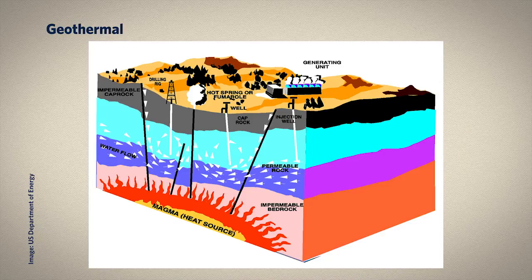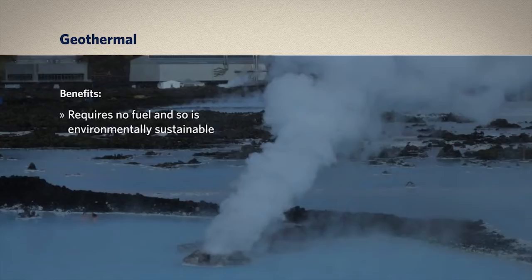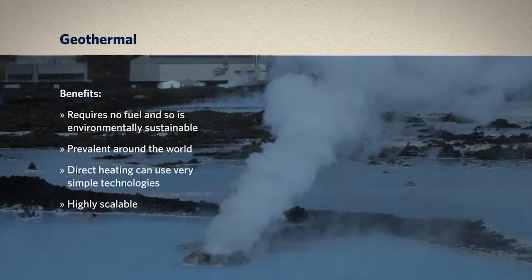Geothermal energy is power extracted from the heat of the Earth. This heat results from radioactive decay processes that continually take place at the planet's core, and from the sun's energy that's absorbed by the Earth's crust. Geothermal energy has been used to provide heat for thousands of years, but it's now more commonly used to generate electricity. Evidence of accessible geothermal power is found in the hot springs located on every continent. Geothermal energy is a viable source of renewable energy because it's widely available and requires no fuel to produce. The heat extracted is considered very small in comparison to that produced by the planet's core, and so it's considered environmentally sustainable.